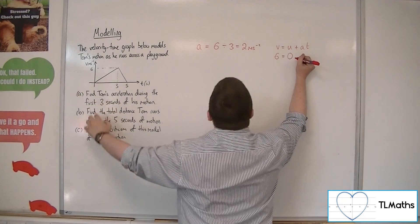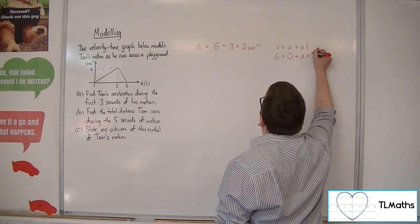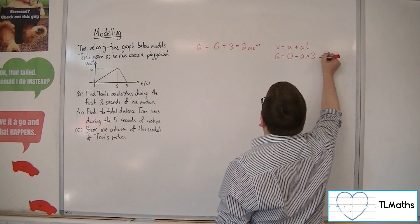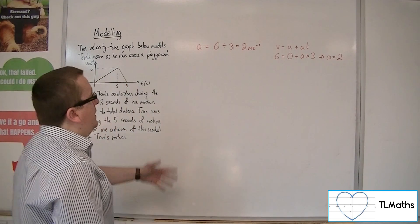U is the initial velocity, which we know is 0, because it's 0 there. Plus A times T, which is 3, and that gives us A is equal to 2. So you can see it either way.